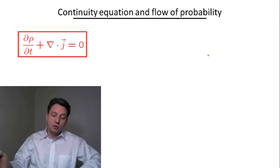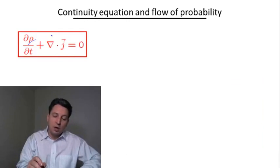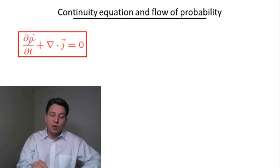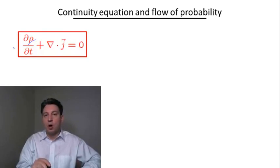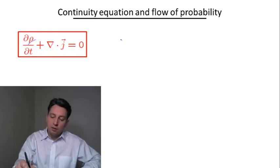Now the form of this equation is actually not specific to quantum theory, and it appears in many different fields of physics. So ρ here is the density of a conserved quantity, in our case this is the probability density.